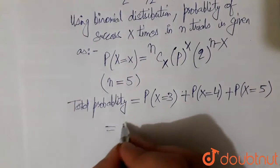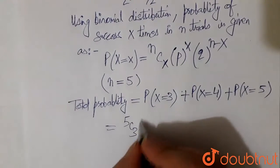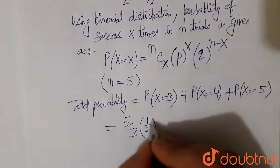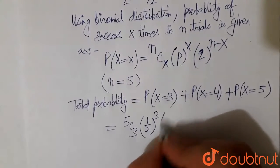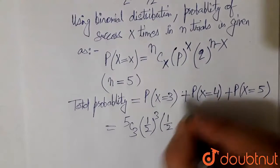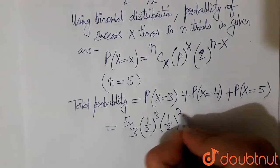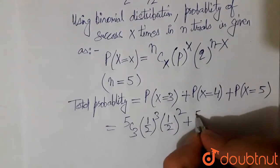So this becomes 5C3, p is 1 by 2 here, so 1 by 2 to the power 3, and q is also 1 by 2, 1 by 2 to the power 2, plus...